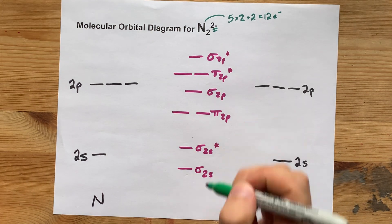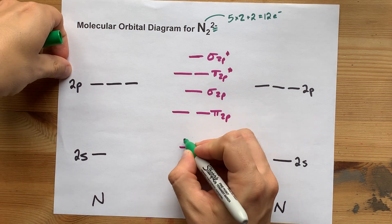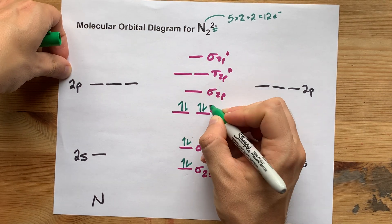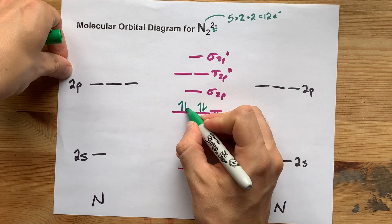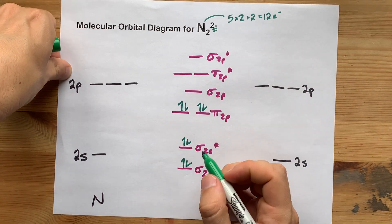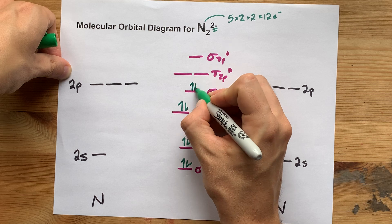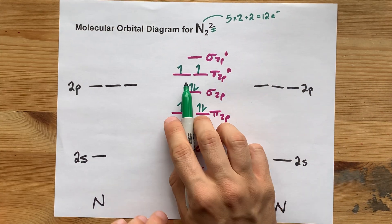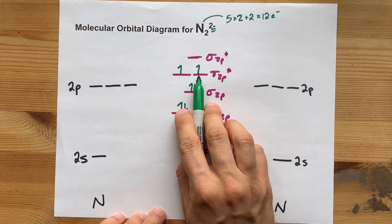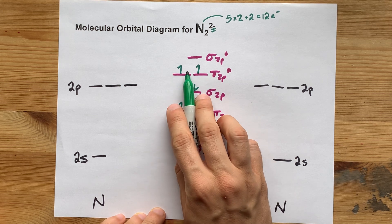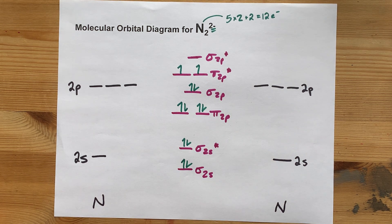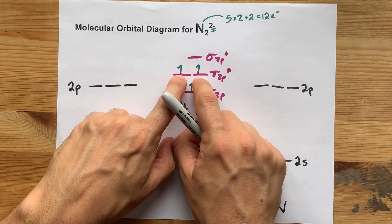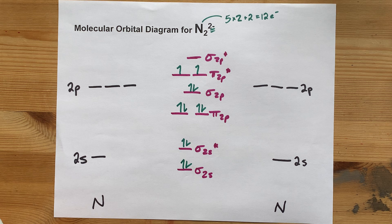We're going to fill it from the bottom up — counting up to 8 electrons. Notice I spread them out before I doubled them up — that's Hund's rule. Continuing to 12 electrons total. You'll lose marks if you put both of the last electrons in the same orbital. You're going to put one electron in each of the degenerate orbitals before you start doubling them up. Here's your drawn molecular orbital diagram for N2 2-minus.